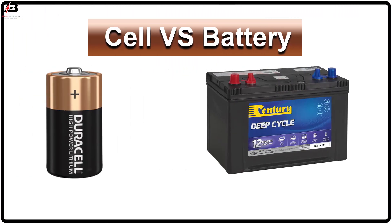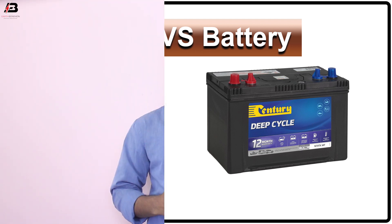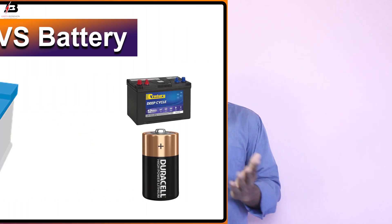The difference between cells and battery is that a cell is a single unit that converts chemical energy into electrical energy, and a battery is a collection of cells. Both cells and batteries store chemical energy and then convert that stored chemical energy into electrical energy. In this video I will show you the difference between cells and batteries.